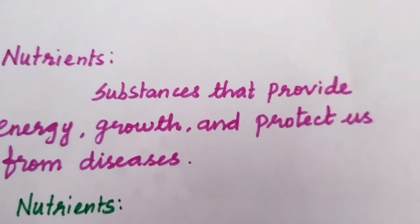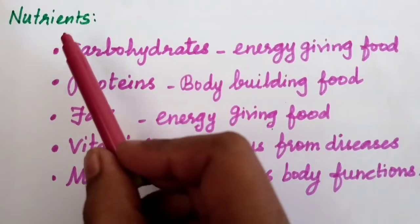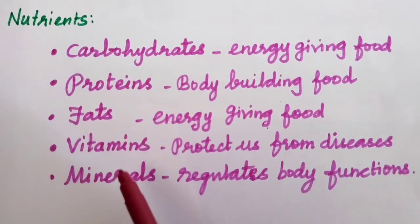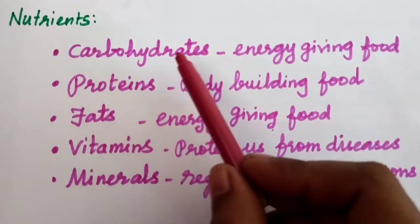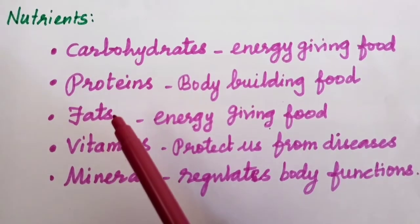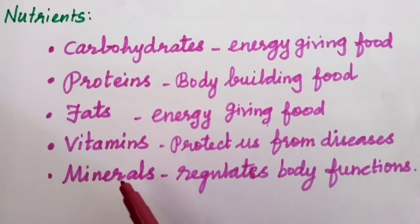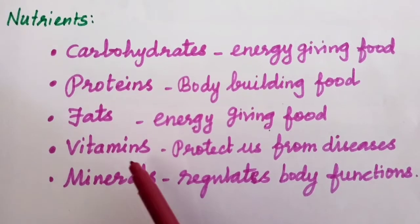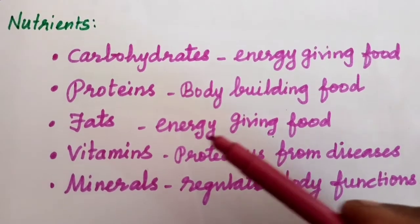The food contains five important nutrients. These are the five important nutrients: carbohydrates, proteins, fats, vitamins, and minerals. These are the five important nutrients that are present in the food.